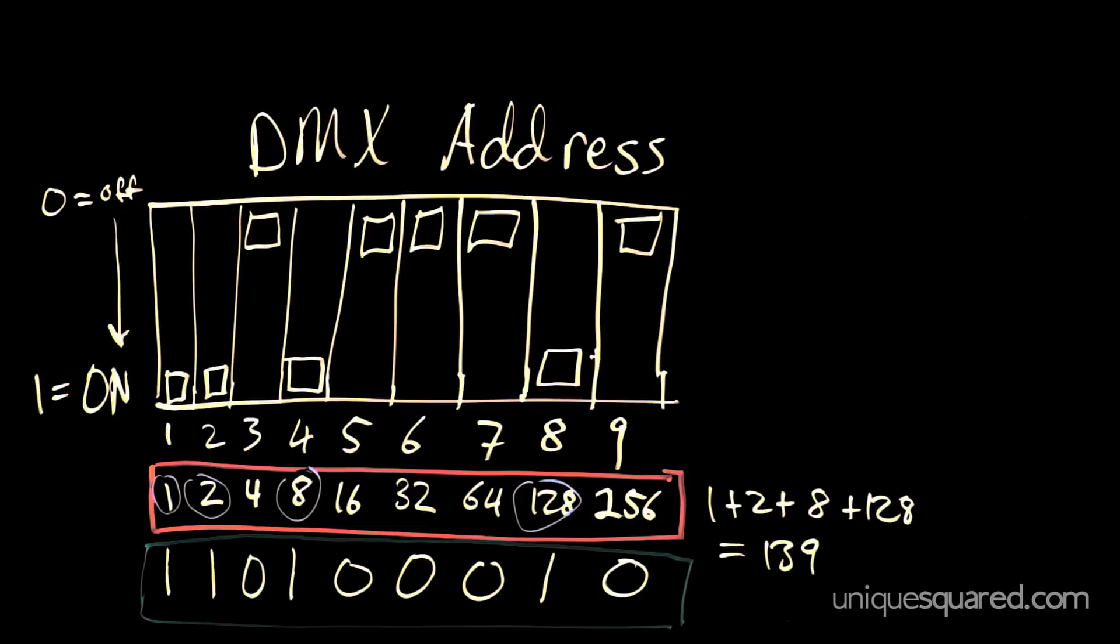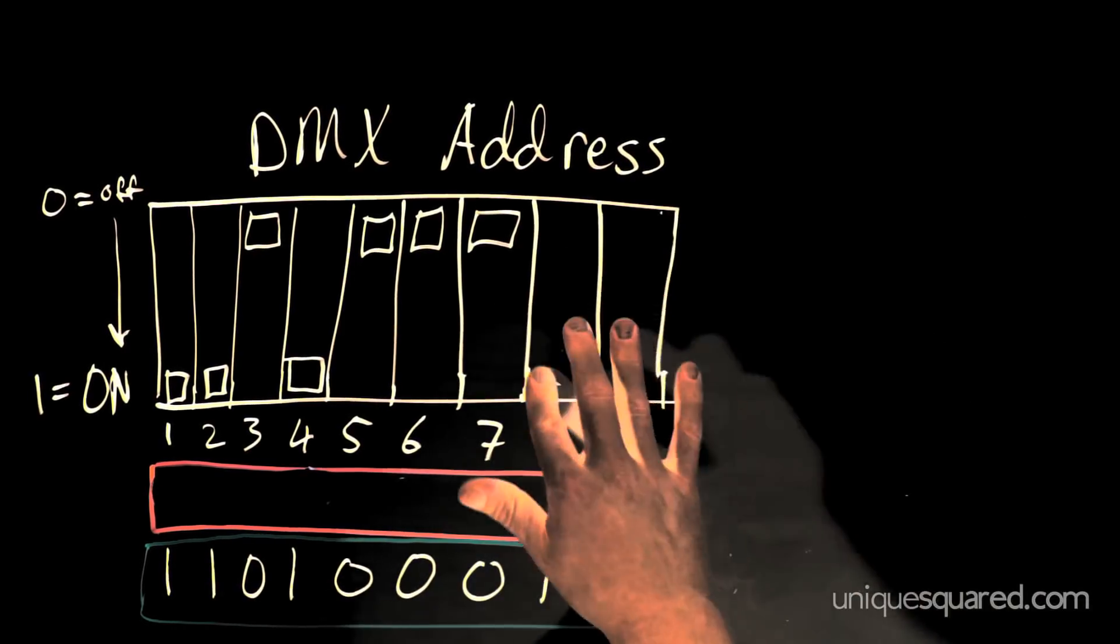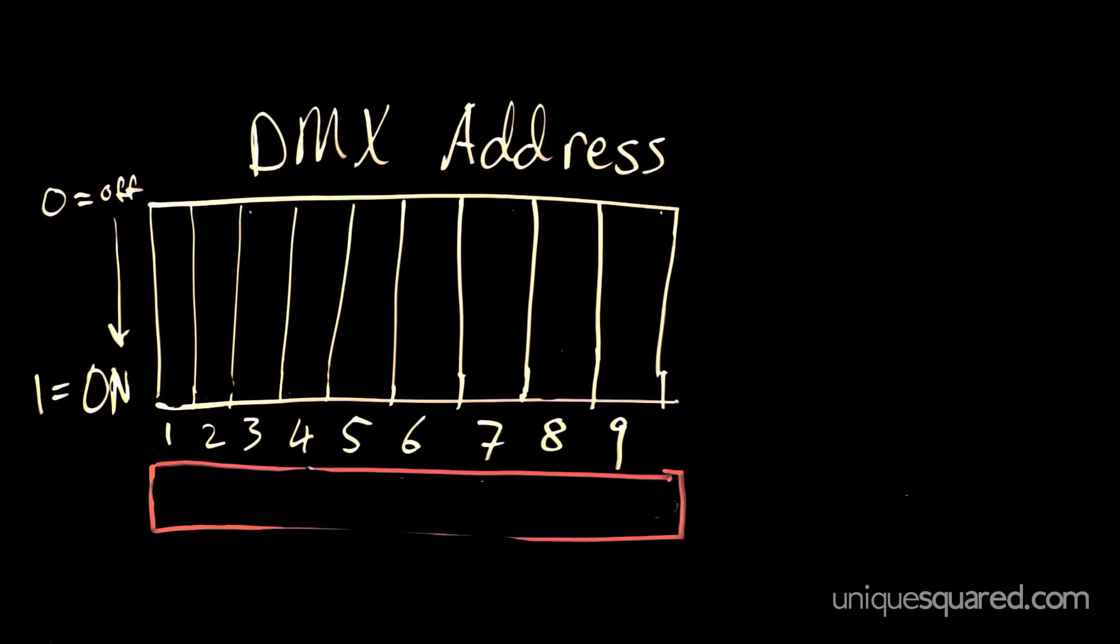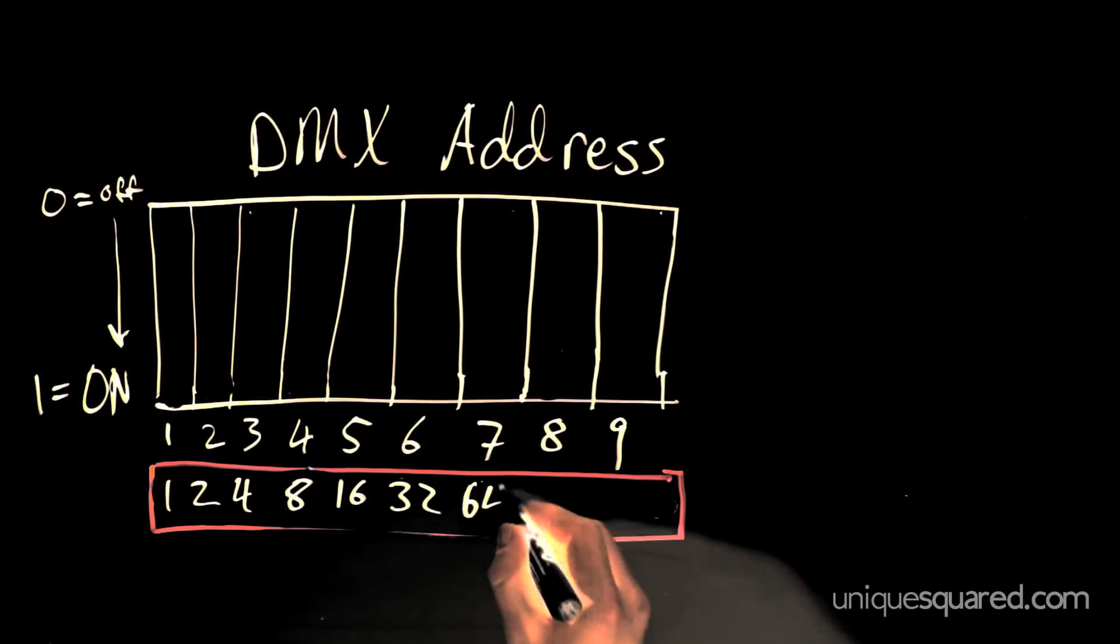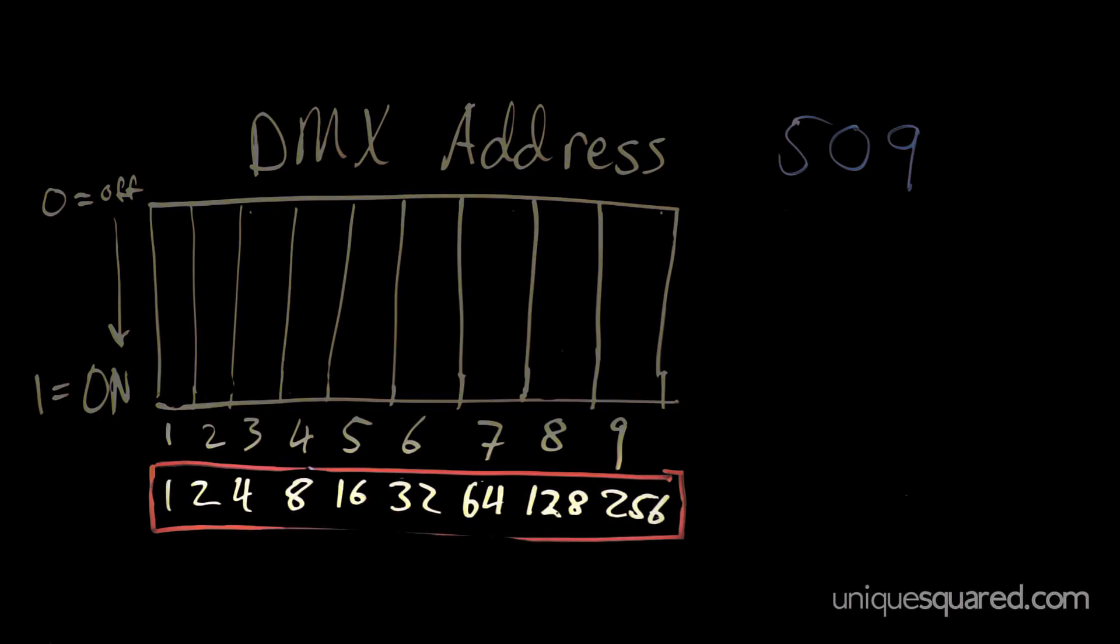But, what if we want to do the reverse? First, how do we translate the DMX address we want into binary? Well, it takes some math. You might want to grab a pen and some paper, too. Let's say we're trying to dial in the DMX address 509 with our DIP switches. Take a closer look at our list of normal numbers. From this list,